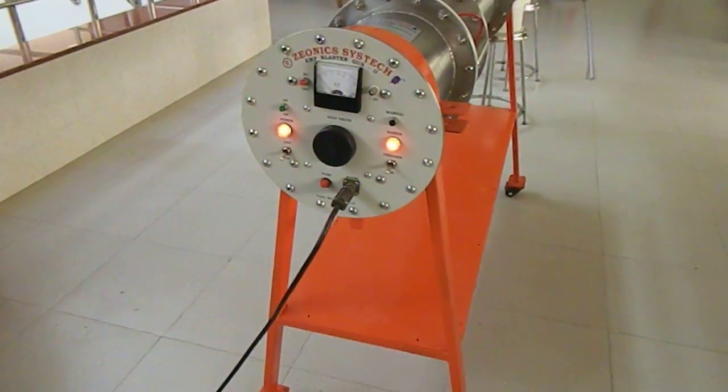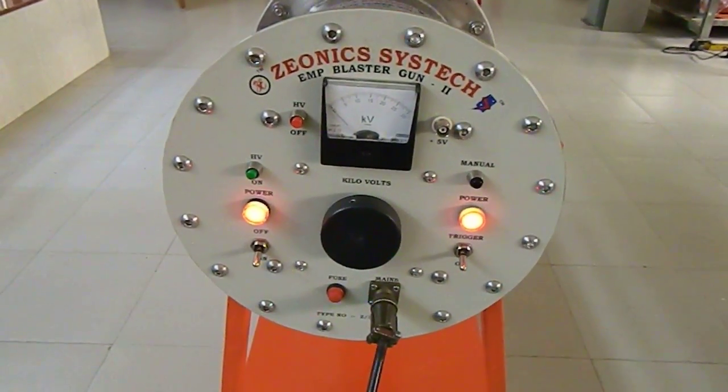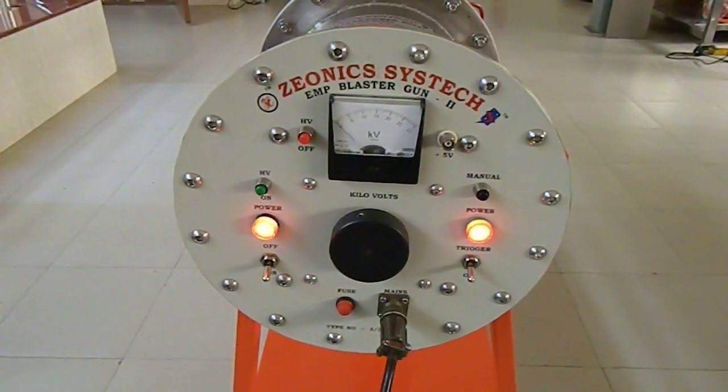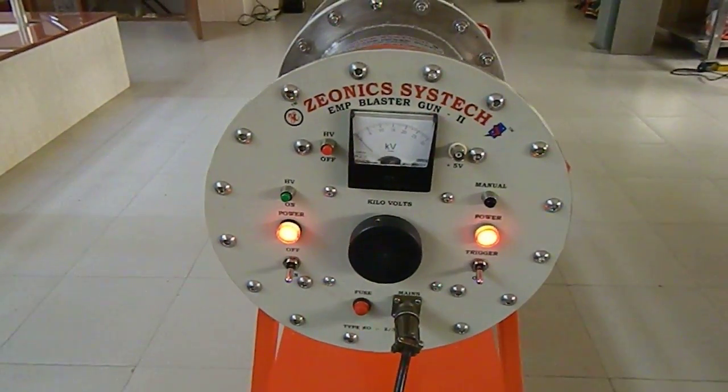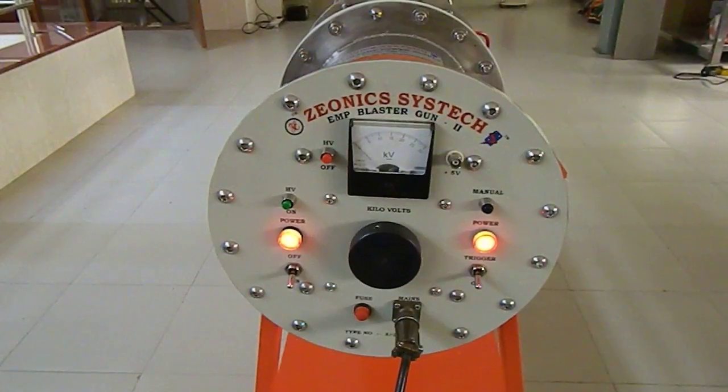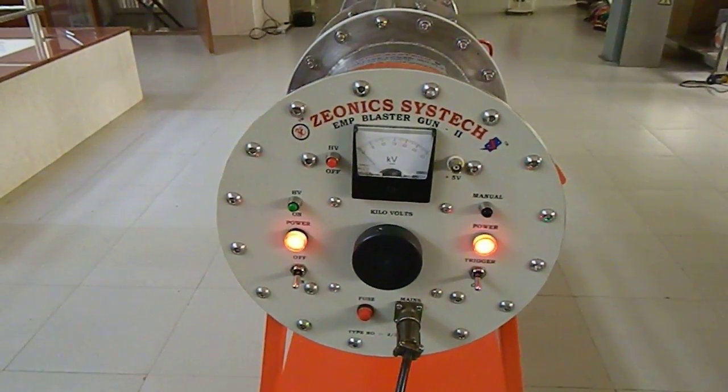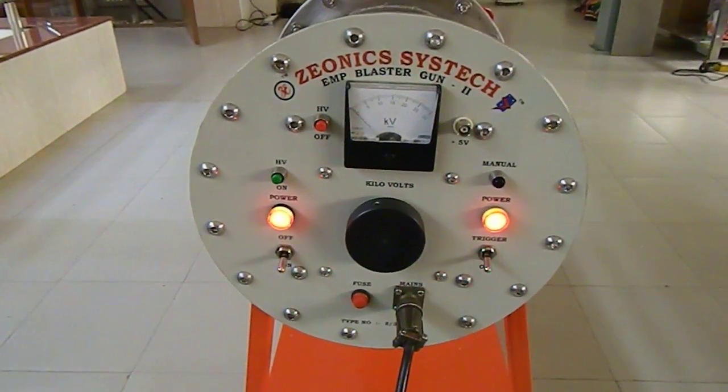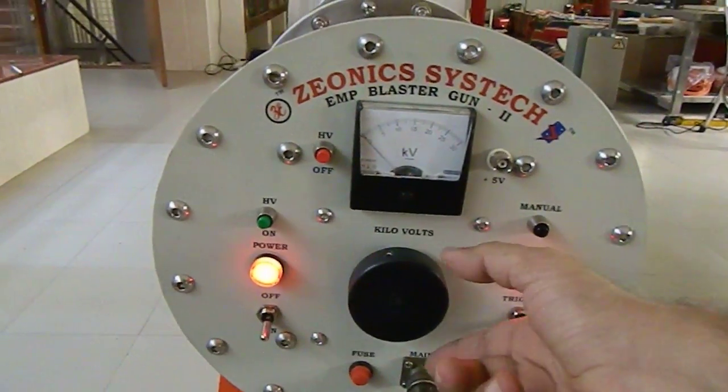This is an EMP system, EMP blaster gun 2. This can generate an EMP pulse of 180 kilovolts with a fast rise time of typically less than 5 nanoseconds. This is the control panel which consists of a variable kilovolt knob. One can turn this clockwise and the voltage will go up.